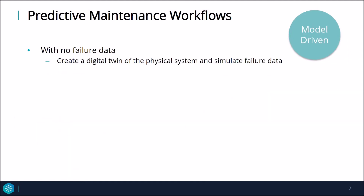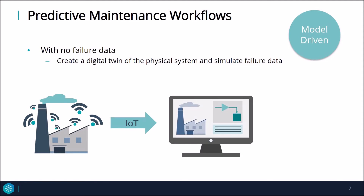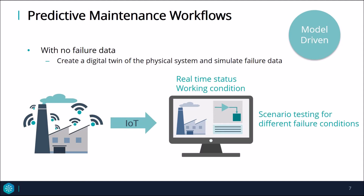When we have no failure data, we can also choose to use a model-driven workflow. For this, we have a physical plant with sensors linked to the Internet of Things. The sensor data is stored in a database or historian. From the sensor information, we can build a digital model which simulates the physical plant using methods like system identification. Using a digital twin in conjunction with the physical plant gives us a good idea of how accurate our model is, to the point where we can use the digital twin to view the real-time status and current working condition of the plant. Once we have a digital model, we can simulate failure events and gather the data generated for different scenarios, which will be used for training a predictive model.